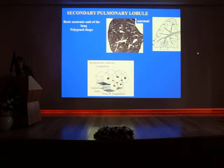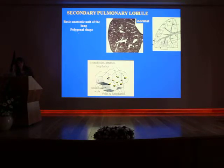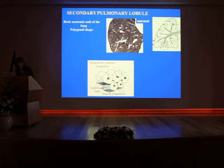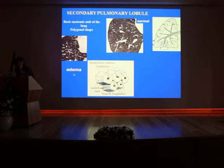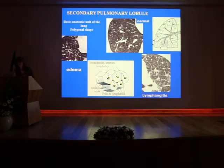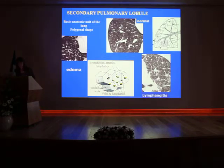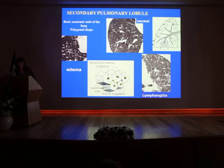The secondary pulmonary lobule is the basic anatomic unit of the lung. Not only can you see the boundaries of the secondary pulmonary lobule, but you need to know that it has a polygonal shape. At the center of the lobule you will find the bronchioles, arteries, and also some lymphatics. At its periphery there are veins and also lymphatics. Having this in mind, you understand why in cardiogenic edema there is smooth thickening of the interlobular septa, because the veins are enlarged. With lymphatic edema, there is irregular thickening of the interlobular septa and also some micronodules, because there are lymphatics at the center of the lobule and also at its periphery.